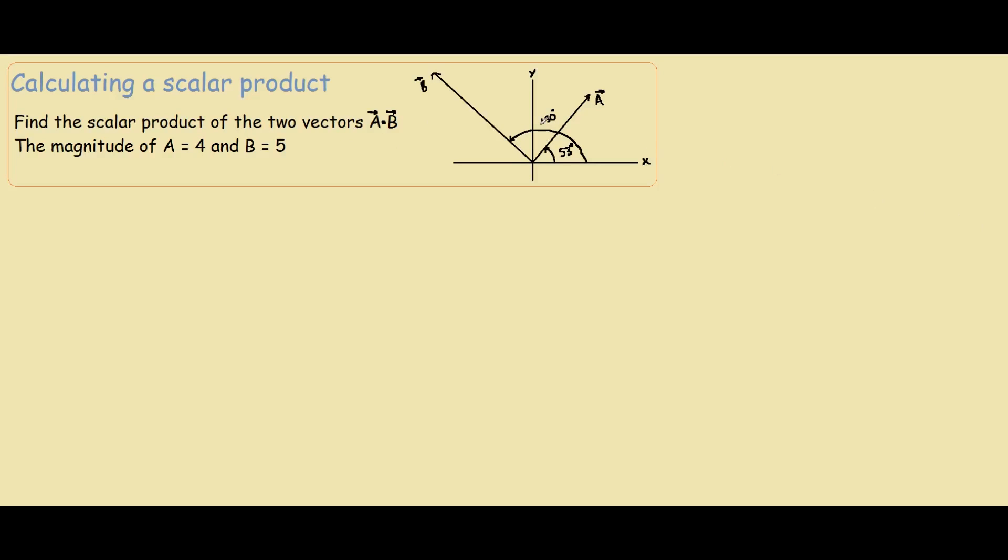In this problem we have two vectors A and B, and we are asked to find the scalar product of the two vectors A dot B. We are given the magnitude of A and B as 4 and 5.